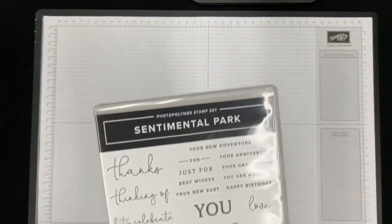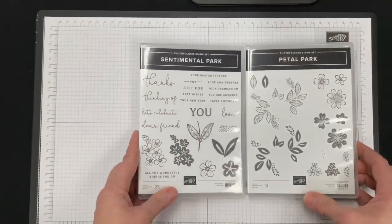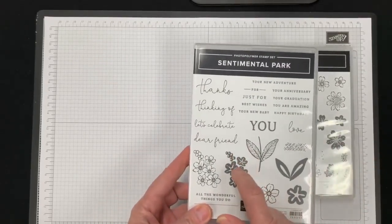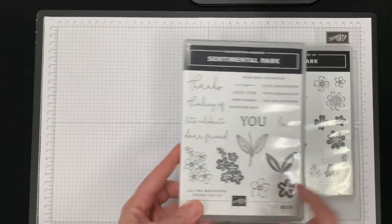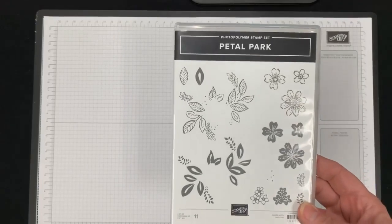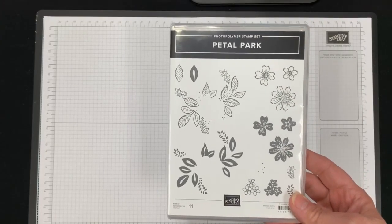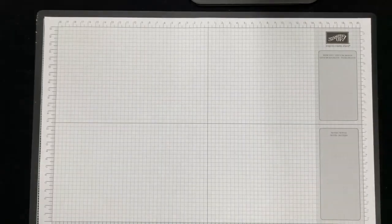Like I said, you can use any sets and stamps that you would like, but I used items from the current spring mini catalog. The Sentimental Park stamp set and the coordinating dies that go with this, and Petal Park stamp set with its coordinating punch. Both of those are bundles from the current mini catalog.